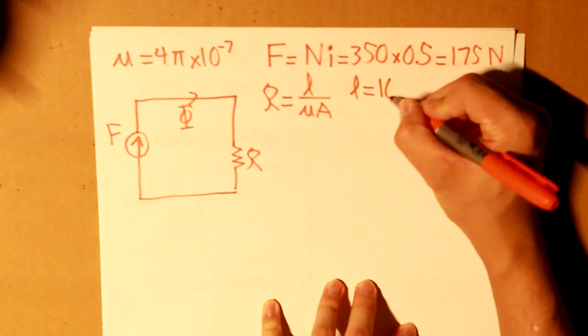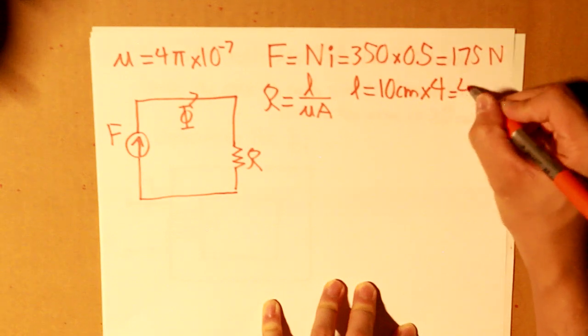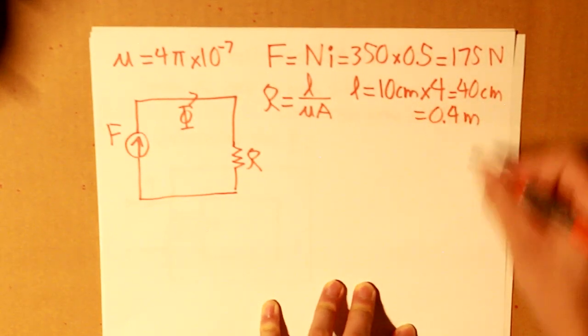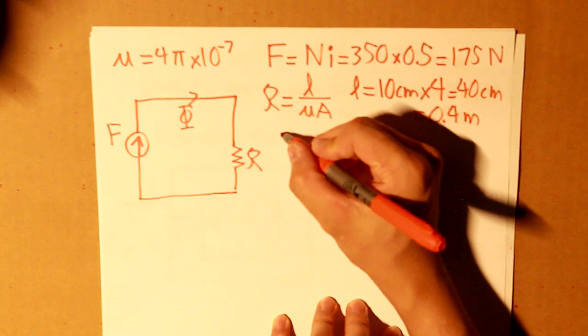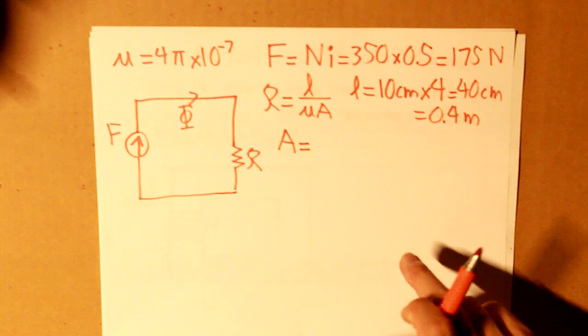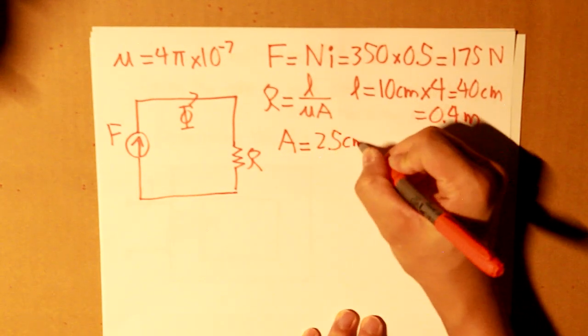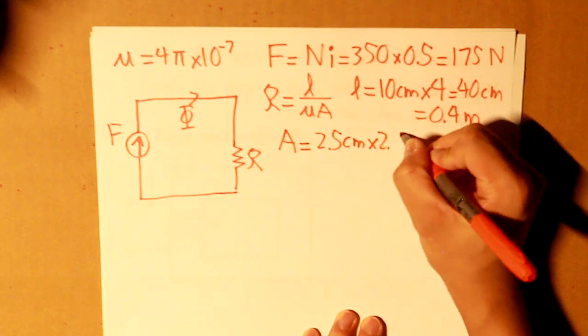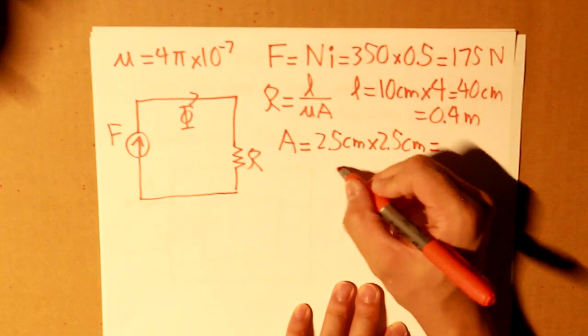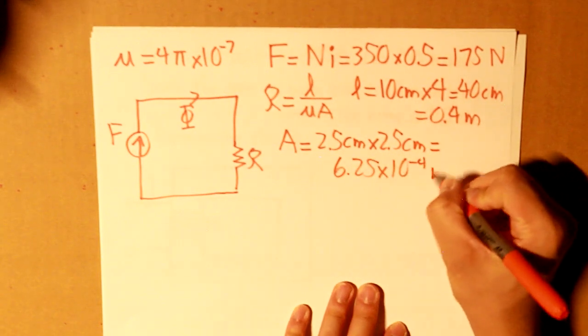So, we take 10 centimeters and multiply it by 4, and what we get is 40 centimeters, or 0.4 meters. Capital A is equal to 2.5 centimeters in thickness. So, we take 2.5 centimeters, and then multiply it by 2.5 centimeters again. And what we get is 6.25 times 10 to the negative 4 meters squared.